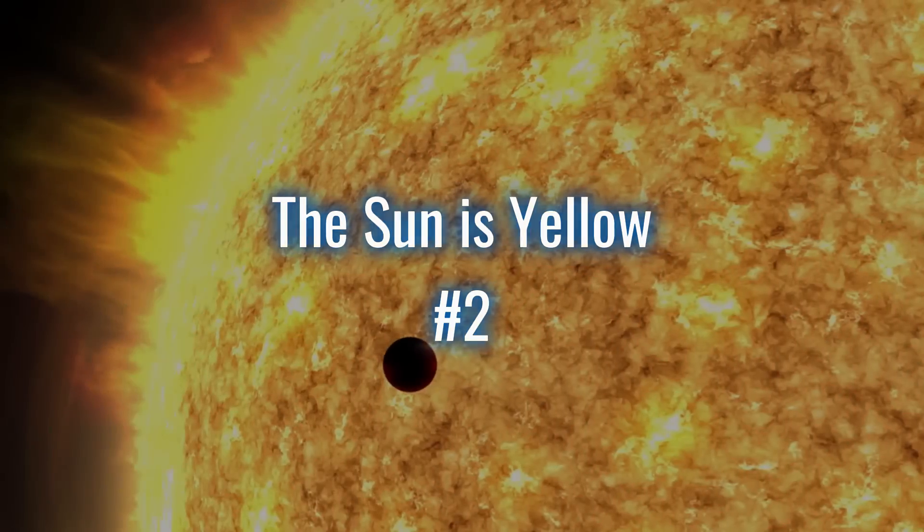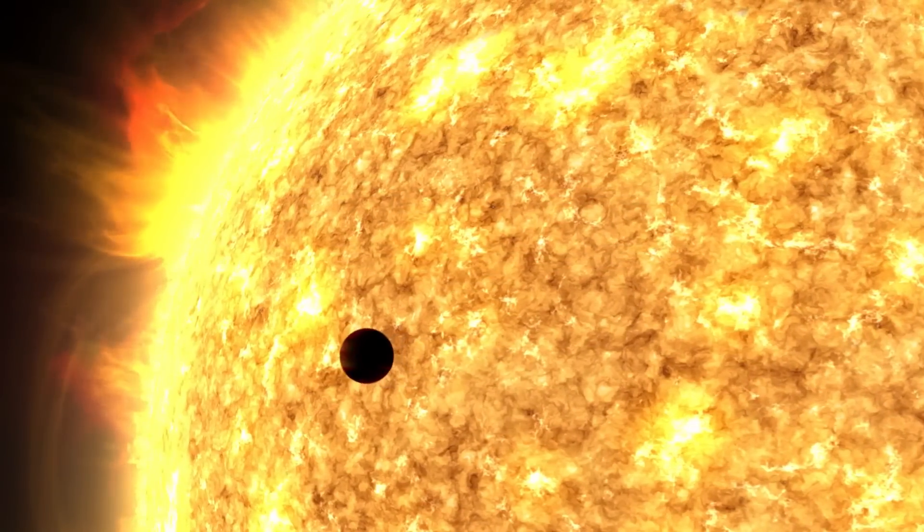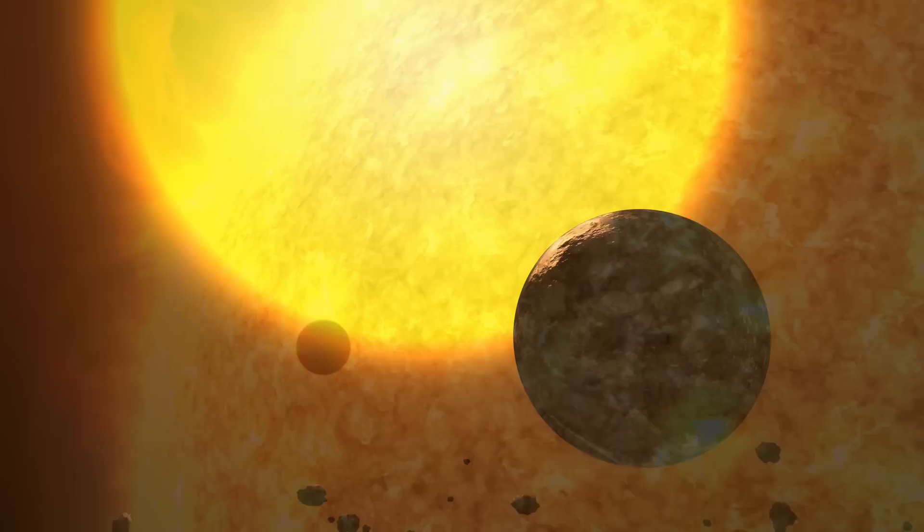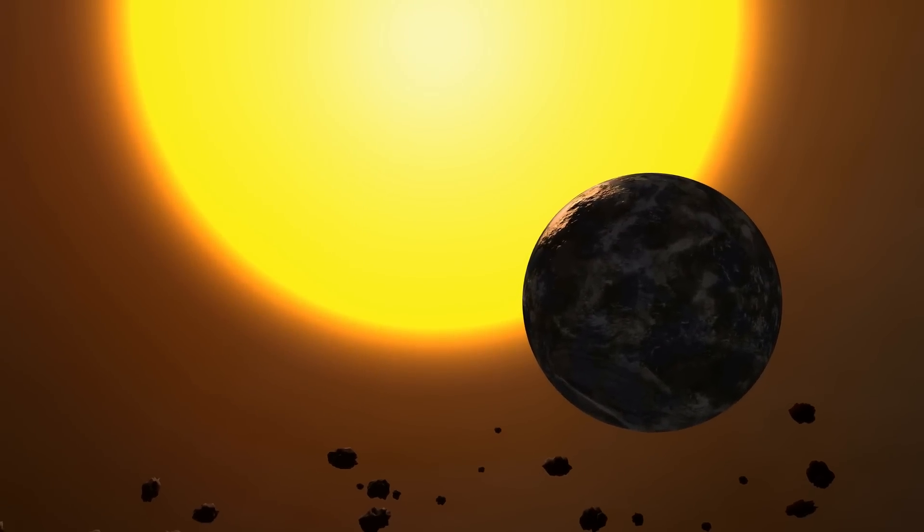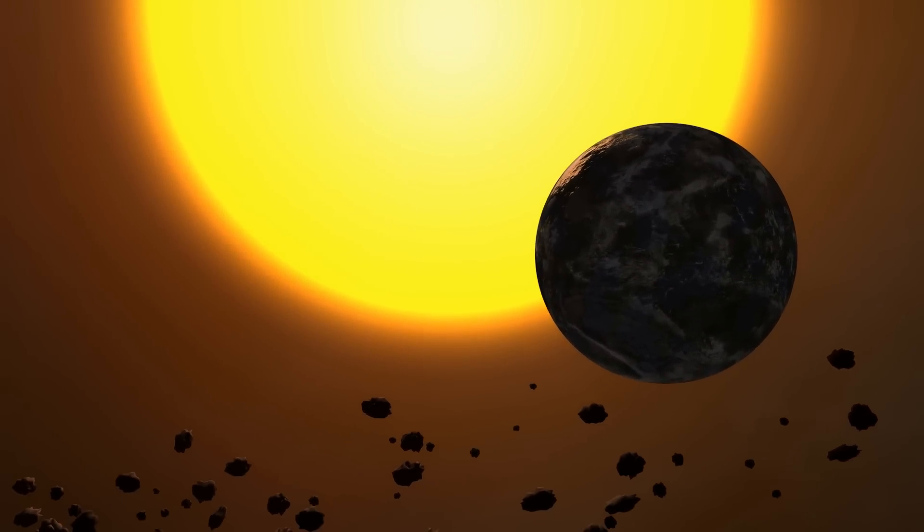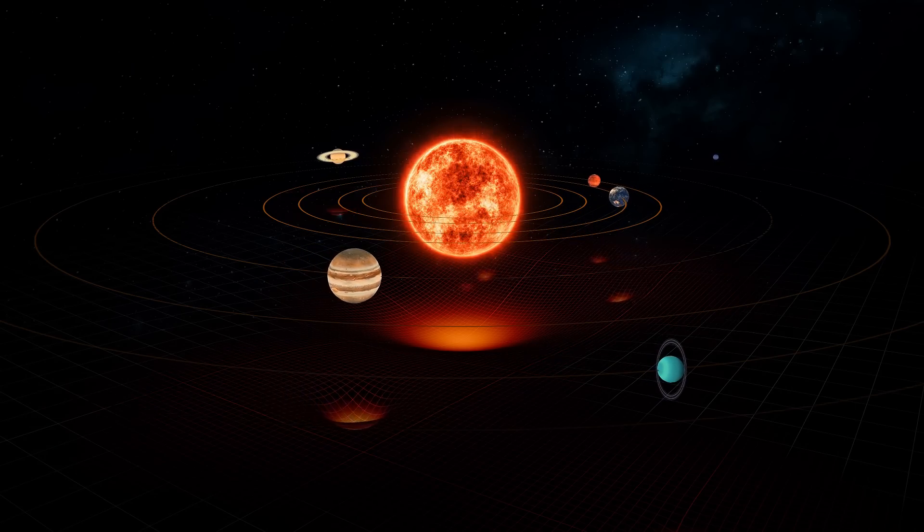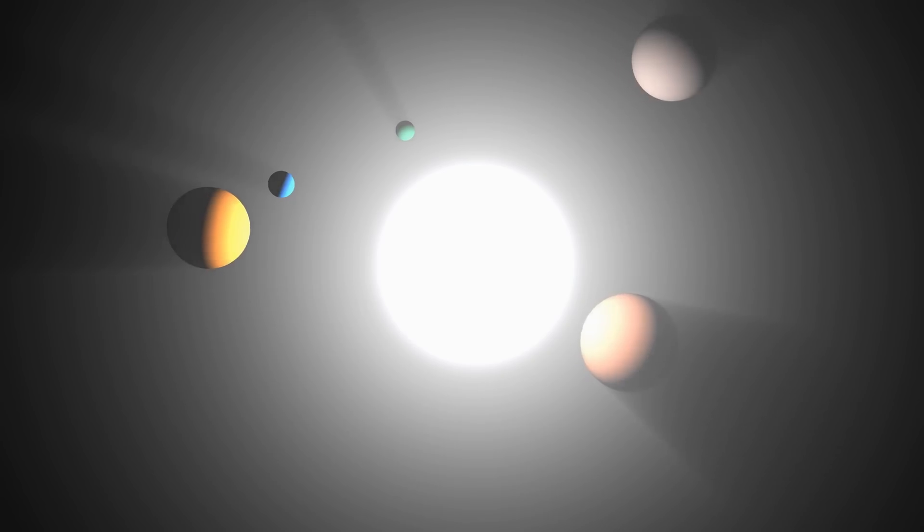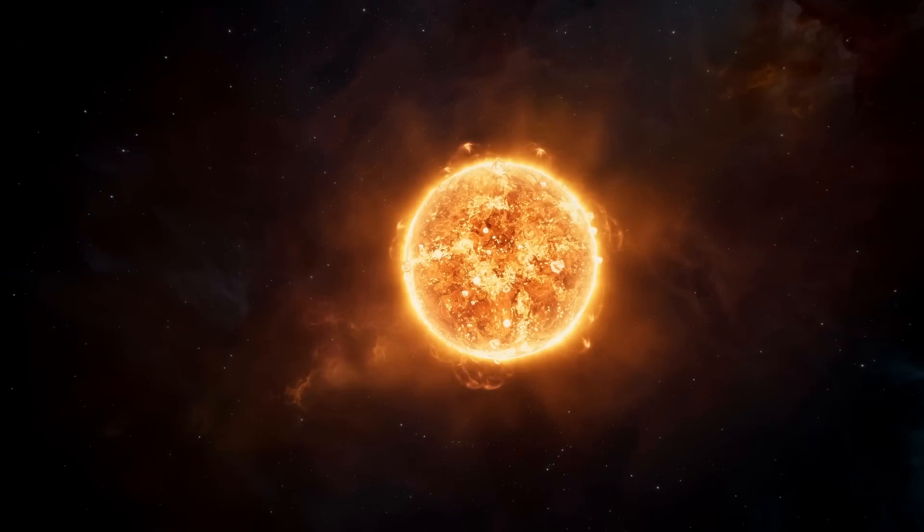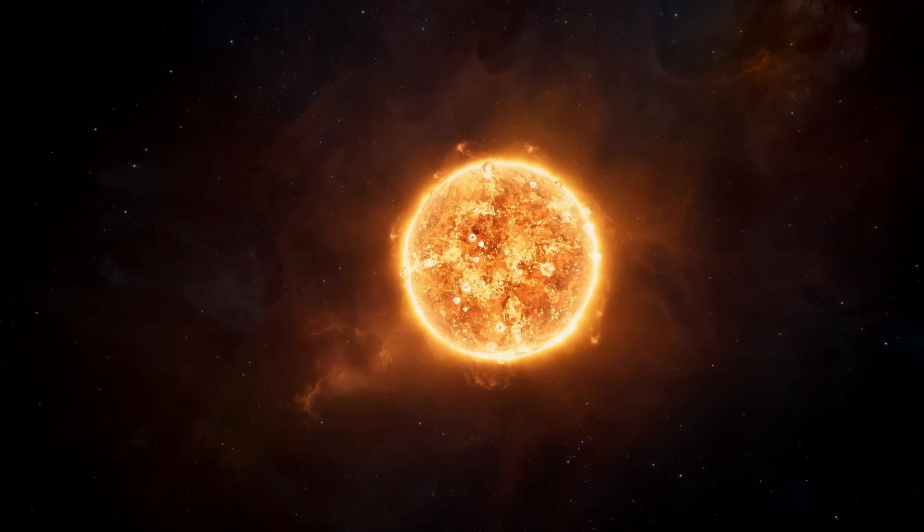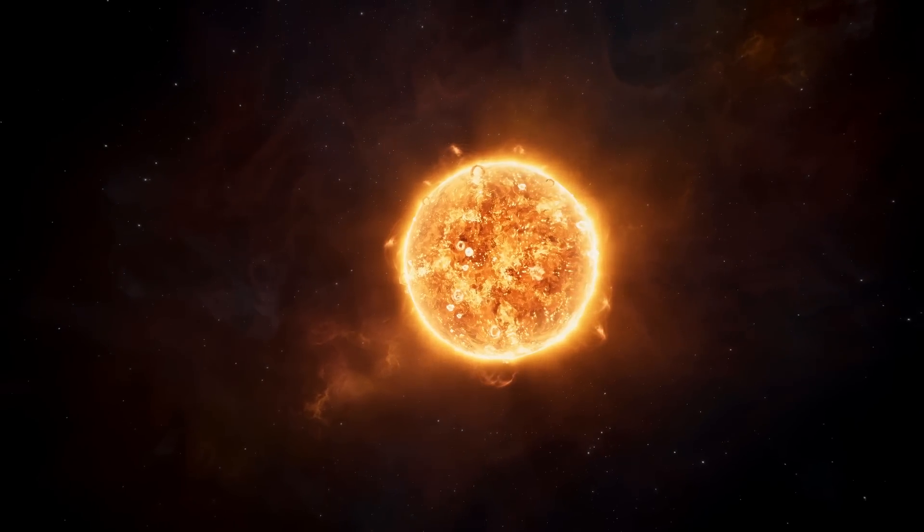2. The sun is yellow. Surprise! The sun isn't actually yellow, it's closer to green. But because our atmosphere scatters blue light, it appears yellowish from Earth. In reality, the sun gives off all colors of visible light, which mix together into white. So technically, the sun is a dazzling white ball of nuclear fusion, not a big yellow fireball.